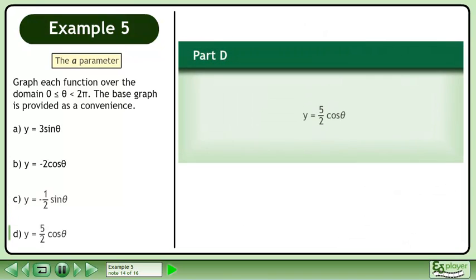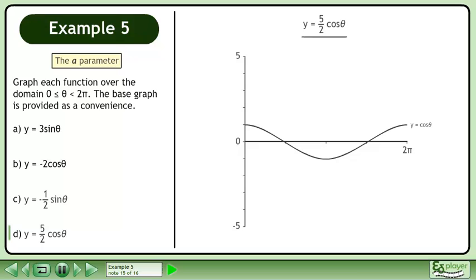In part D, draw the graph of y equals five-halves cos θ. Let's bring up the graph of y equals cos θ.